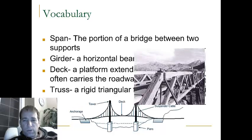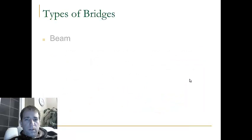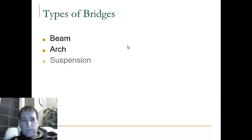There are three types of bridges. The first type is a beam bridge. The second type is an arch bridge. And the third type is a suspension bridge.